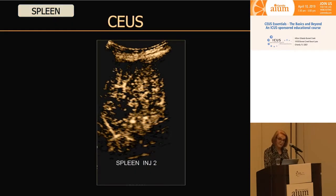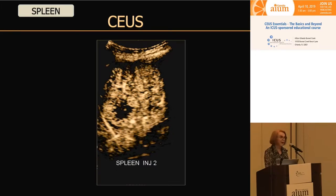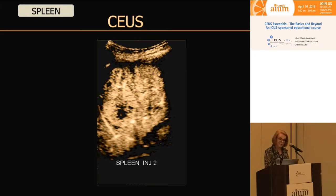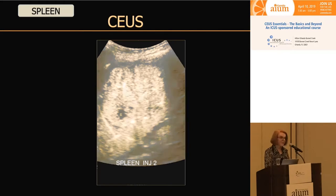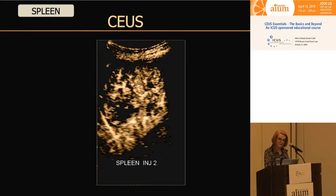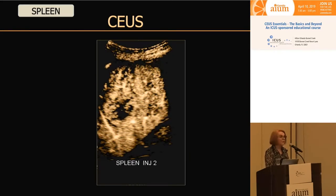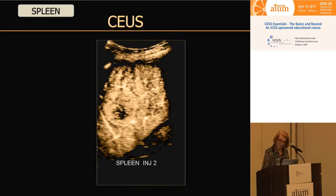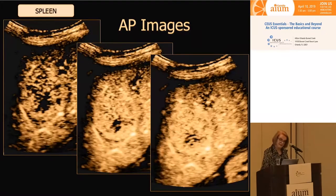On grayscale scan, I had no idea what this was beyond that it's a mass — a focal hypoechoic mass. We're always worried about hypoechoic masses everywhere, so we do a contrast ultrasound. You can see his spleen is very avid for the contrast, but the mass is also quite avid, filling from the periphery into the center. Looking at this, I thought I wonder if this is a hemangioma in his spleen.